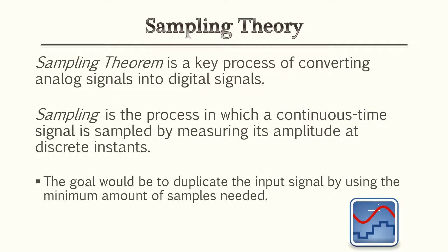For this lesson, we'll be focusing on sampling theory. Sampling theory is a key process of converting analog signals into digital signals. The key process to focus on is the term sampling. Sampling is the process in which a continuous time signal is sampled by measuring its amplitude at a discrete instance. The goal is to duplicate an input signal by using a minimum amount of samples needed.